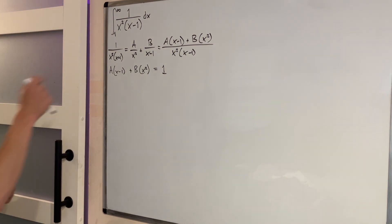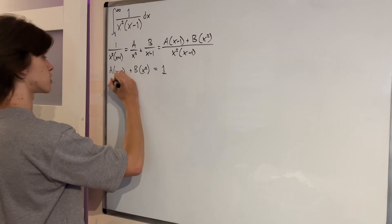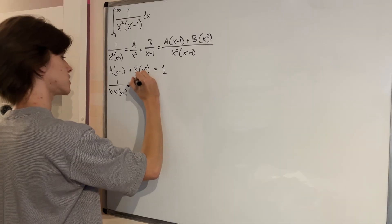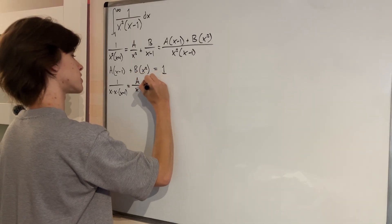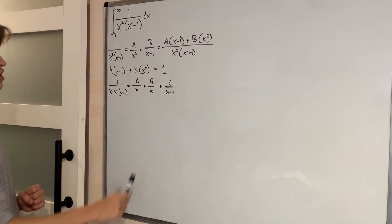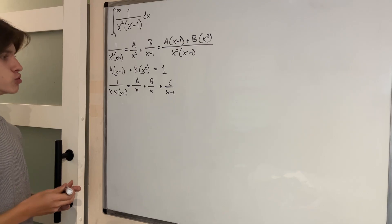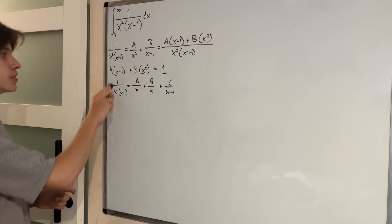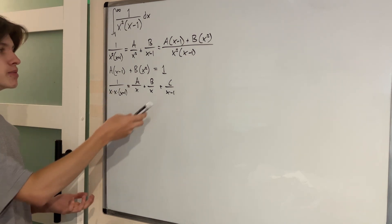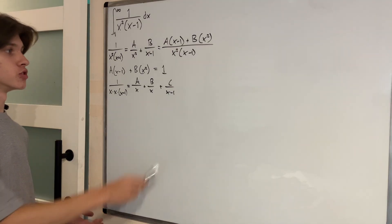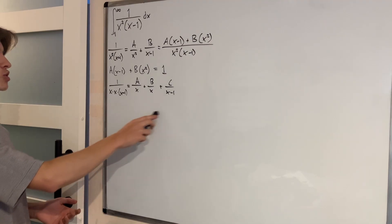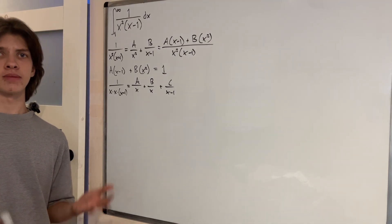How about we try three fractions? Maybe we write 1 over x squared times x minus 1 as 1 over x times x times x minus 1, and then we'll have a, b, and c such that a over x plus b over x plus c over x minus 1 equals our fraction. But again, if we do this whole process, we will get some non-matching degrees for our polynomials. So we cannot possibly pick such numbers for a, b, and c such that these polynomials will cancel out to 1. Not possible.